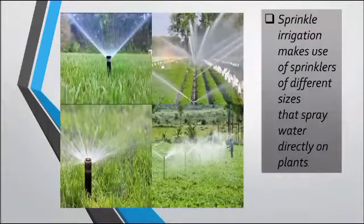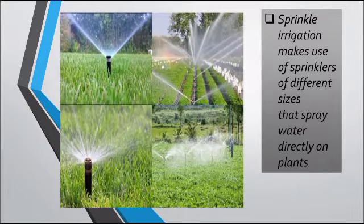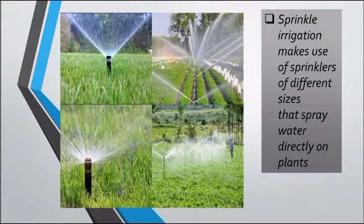The next method is sprinkler irrigation. Sprinklers of different sizes are used and they help the crops or farms get water. You might have seen such sprinklers or fountains in gardens where they help the grass get water across a particular area. These sprinklers have holes and sometimes rotate so that the entire farm gets water evenly and nothing is wasted. The tap can be turned off when water is not required.